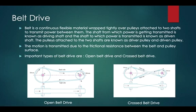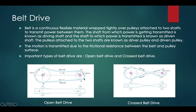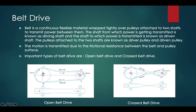A belt is a continuous flexible material wrapped tightly over the pulley attached to two shafts to transmit power between them. The shaft from which power is transmitted is known as the driving shaft, and the shaft to which power is transmitted is known as the driven shaft. The pulleys attached to the two shafts are known as the driver pulley and driven pulley, and the belt is held between them to transmit power.